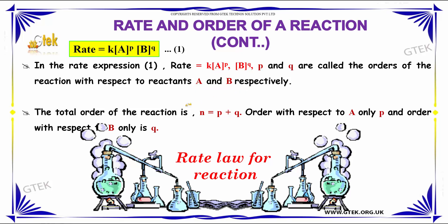The total order of the reaction is n is equal to p plus q. So order with respect to A only is p and order with respect to B only is q.